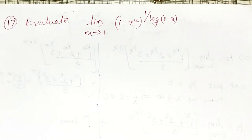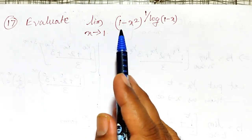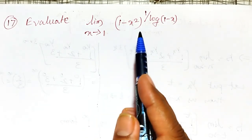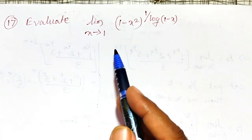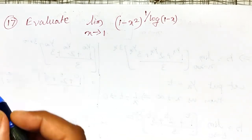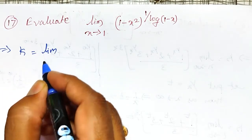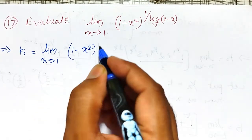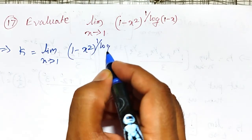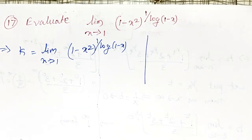In this video I am going to evaluate the limit as x tends to 1 of (1 minus x squared) raised to the power 1 divided by log(1 minus x). This is a little different. Let me call this k equal to the limit as x tends to 1 of (1 minus x squared) raised to 1 divided by log(1 minus x). Let me check which indeterminate form we have.